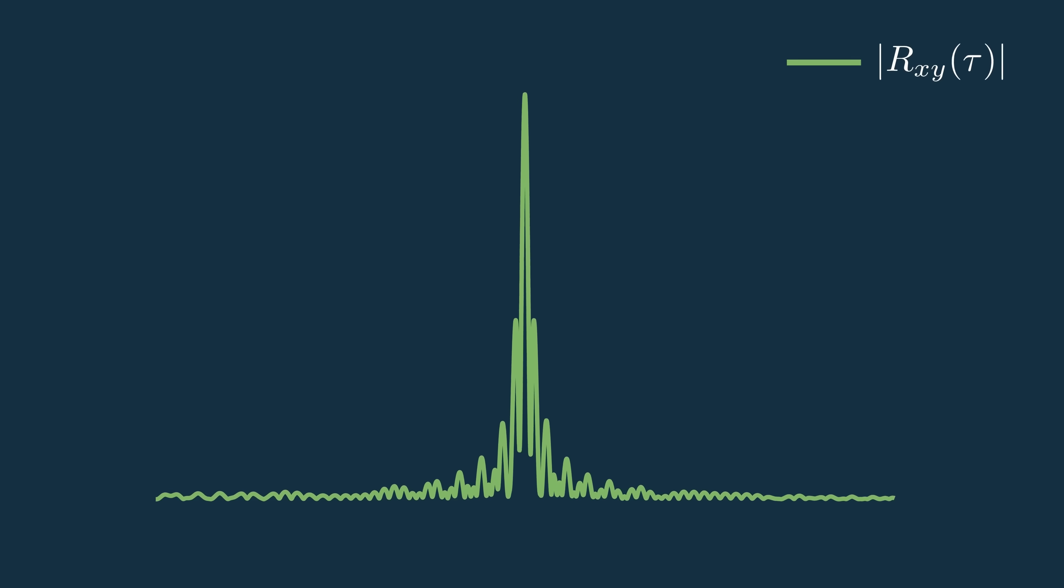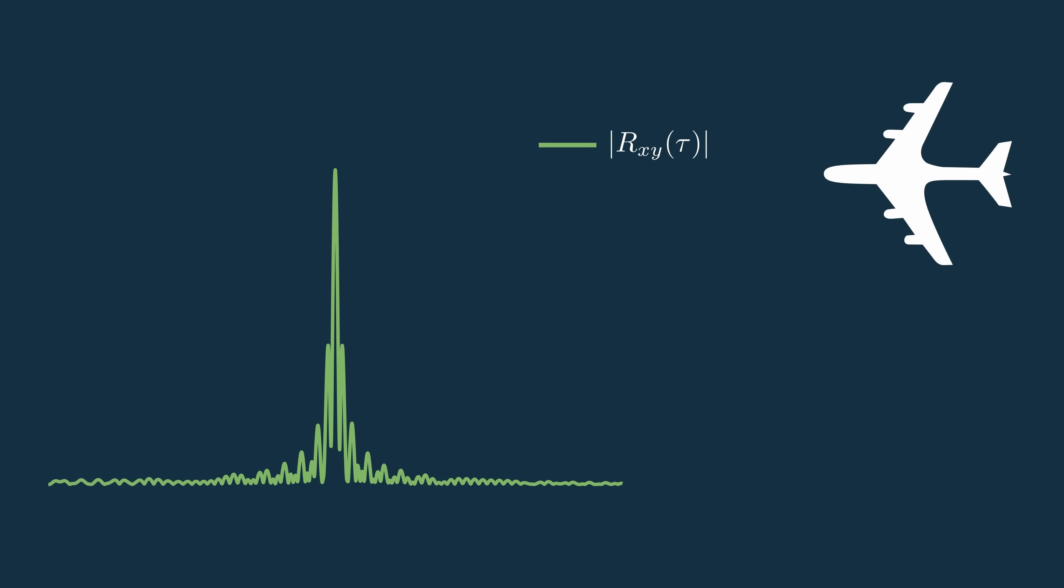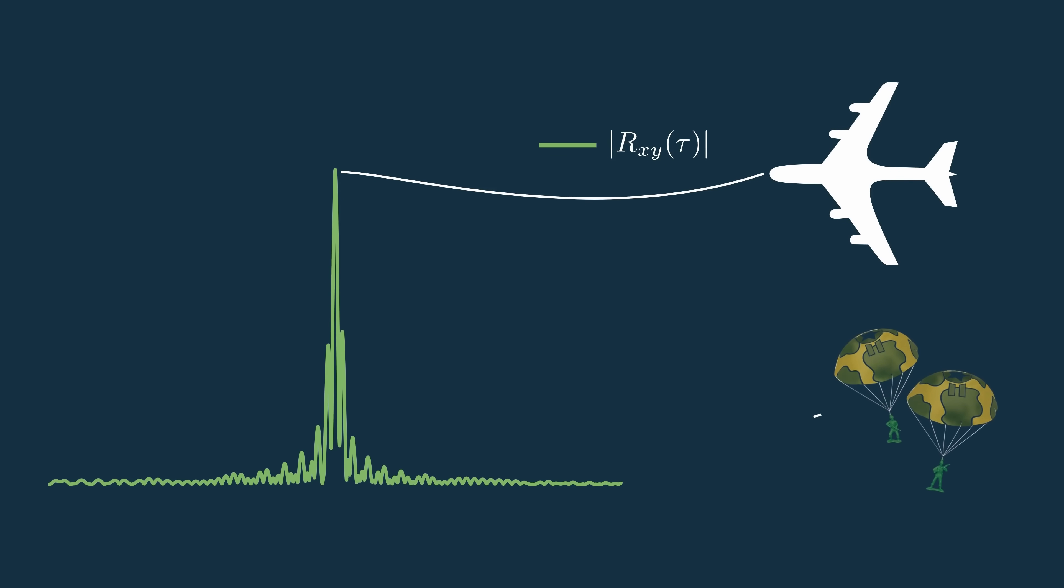To see this effect, say we have two targets, a large plane, which is causing this return right here, and someone parachuting from the plane. The plane is a large chunk of metal, so it'll have a much larger return than the radar signal absorbent human. After doing pulse compression and matched filtering, we should get two pretty distinct peaks from the targets.